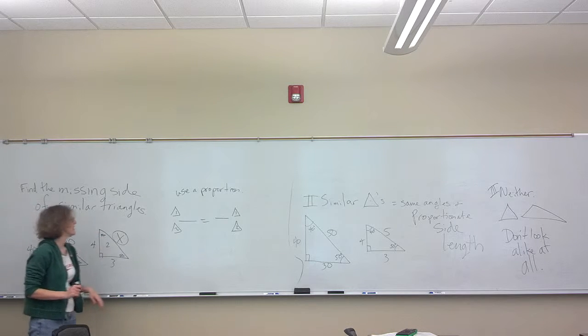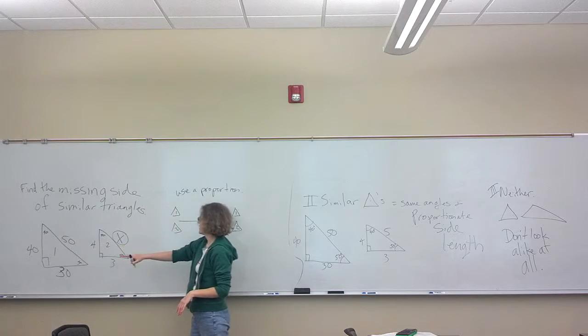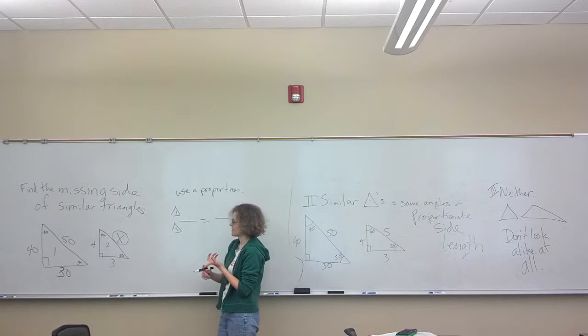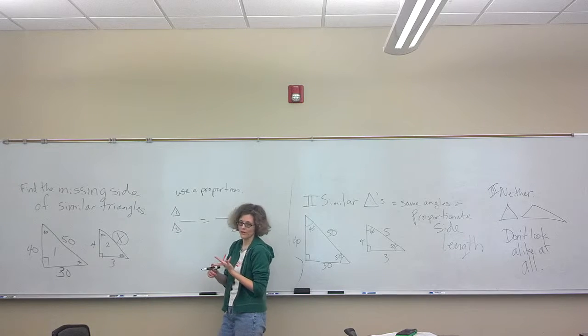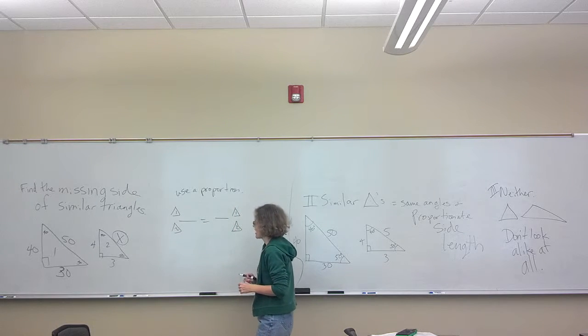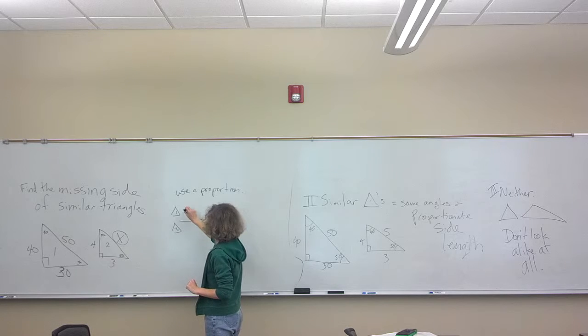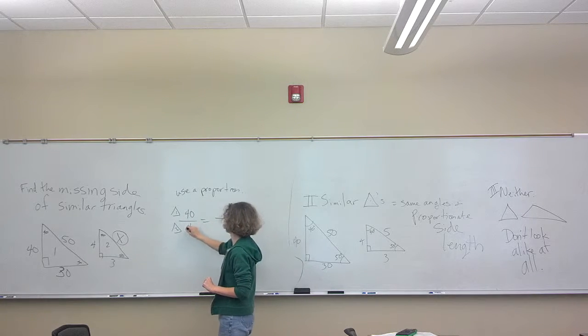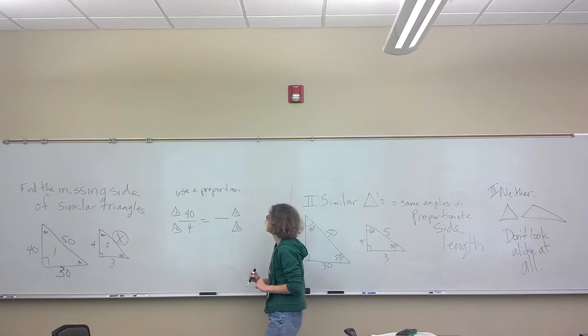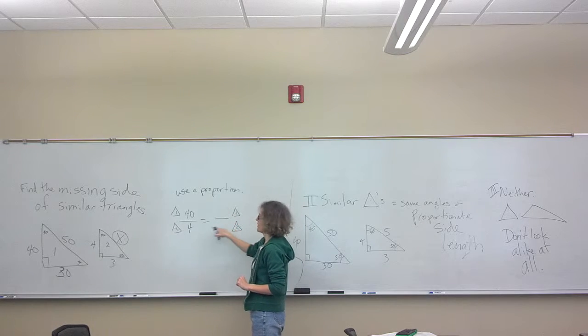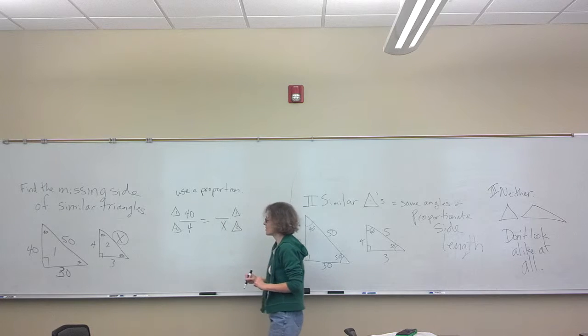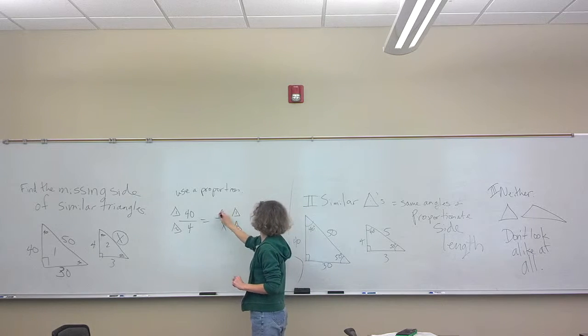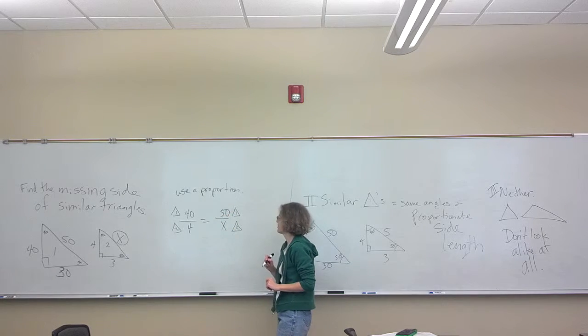and 50 corresponds to the X. So you can start with either one of these number relationships, the 30 to 3 or the 40 to 4, and set up this first fraction. I want to go ahead and use the 40 this time. So 40 from triangle 1 corresponds to the 4 on triangle 2. And now this one has to have an X in it somewhere. The X is on triangle 2, so it goes on bottom. And the X corresponds to the 50 on triangle 1.